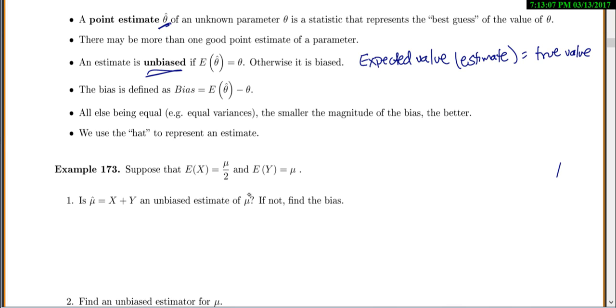We want to see if it's biased or not. So the first thing you're going to do is find the expected value of your estimate. Our estimate is X plus Y. So we need to find the expected value of X plus Y. This comes back to all of those expected value rules. This will be the expected value of X plus the expected value of Y. The expected value of X is mu over 2, the expected value of Y is mu. So if you add those together, you get 1.5 mu.